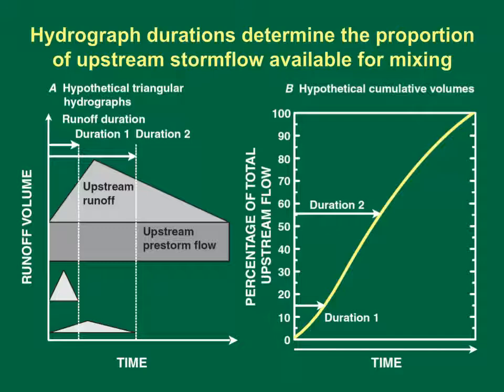This hypothetical figure shows the importance of simulating the timing of storm flows within a runoff event. The diagram on the left shows the runoff hydrograph from a basin upstream of a site of interest and two potential hydrographs from that site. The hypothetical graph on the right shows the cumulative percentage of total upstream storm flow that occurs as the storm progresses. The diagram shows two potential runoff hydrographs: one with a short duration (duration 1) and the other with a longer duration (duration 2). In this example, only 15% of upstream storm flow occurs during duration 1, and about 55% occurs during duration 2. The basin length and slopes may affect the outcome of simulations by controlling the basin lag time.